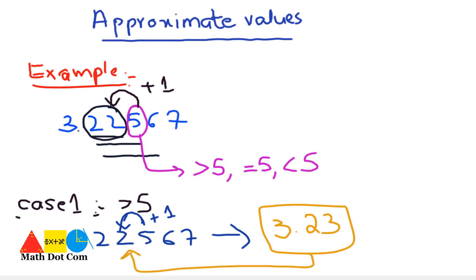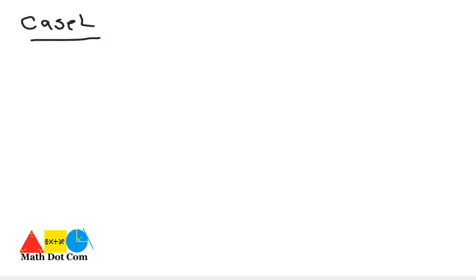This is the approximate value of this number — whether it is a terminating decimal number or a non-terminating decimal number. This was Case 1. We will see Case 2 by taking another example: if you are given with 2.3427, how will you approximate its value?